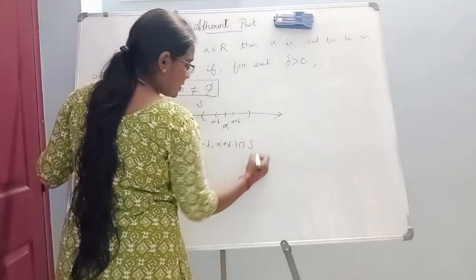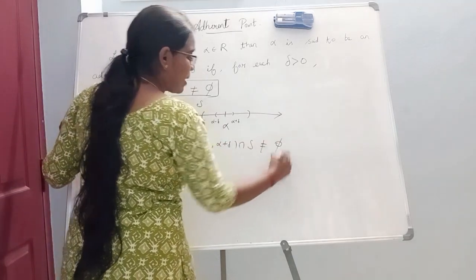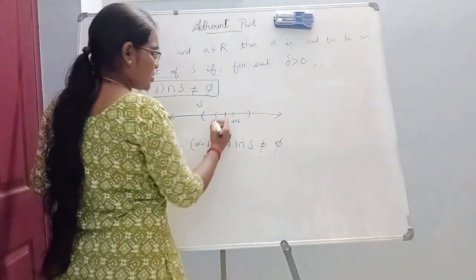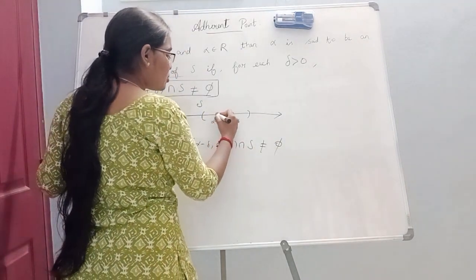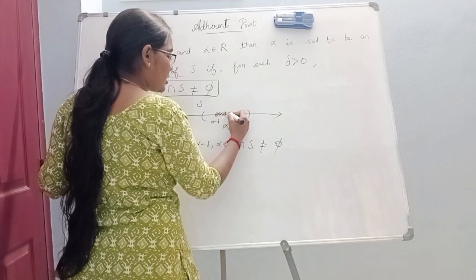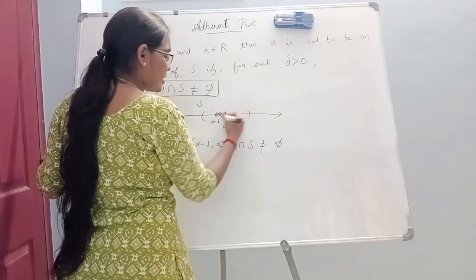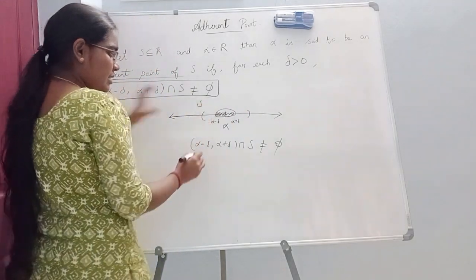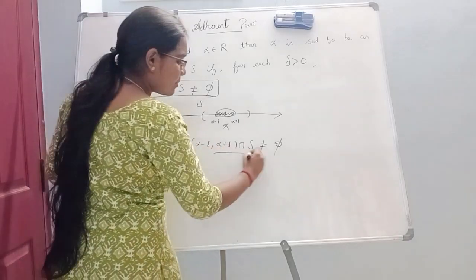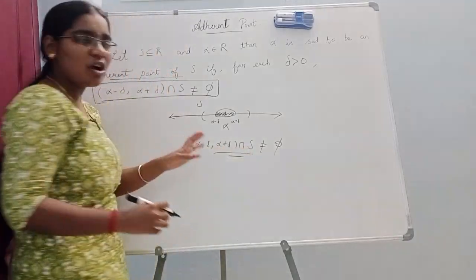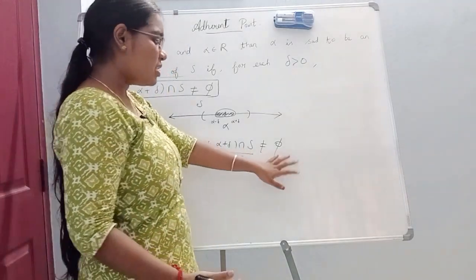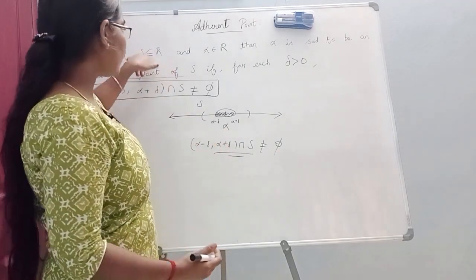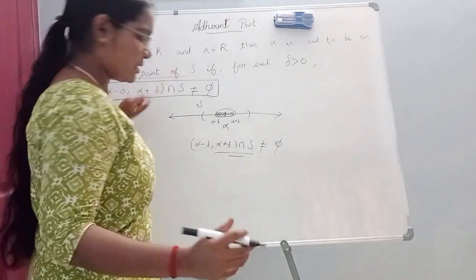That means we intersect the interval (alpha minus delta, alpha plus delta) with S. If the intersection is not an empty set — that is, we have a common value — then we say that alpha is an adherent point of this set S.